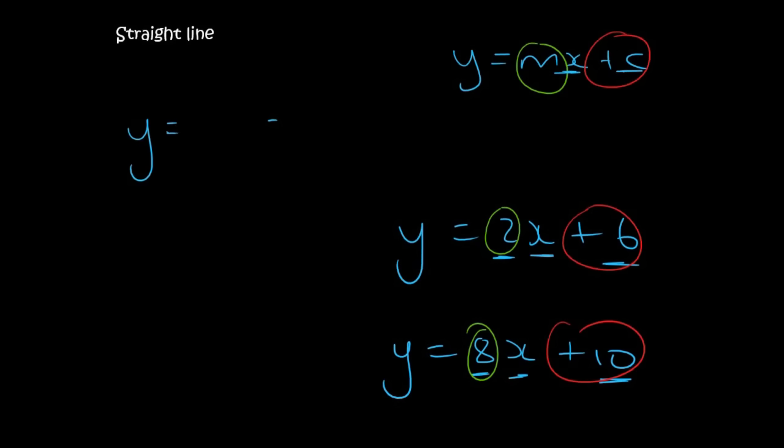So for example, I could reverse it, and I could say 2 plus 4x. Then the 4 is still going to be called your, or that's still the m, because it's the one that goes with x. And then the 2 is going to be your c.